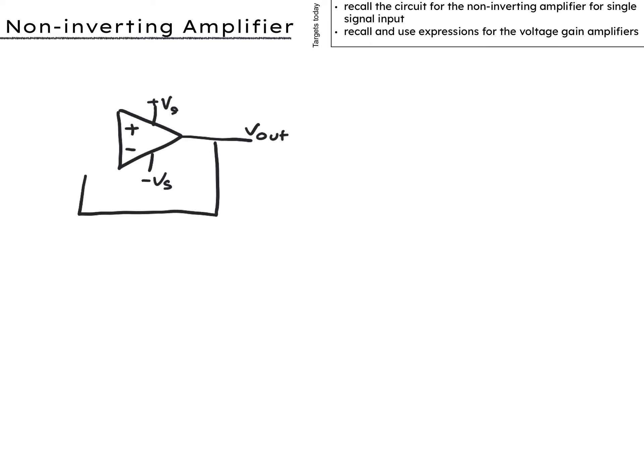Feedback always goes to the inverting input so I'll add that again with the resistor in place so that we only feedback some of the output.